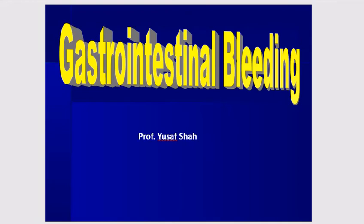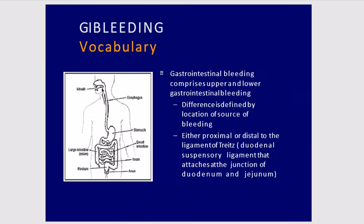Today we are going to talk about gastrointestinal bleeding, which includes upper GI and lower GI bleeding. Gastrointestinal bleeding comprises upper and lower intestinal bleeding, and the difference is defined by the location of the source of bleeding — either proximal or distal to the ligament of Treitz, the duodenal suspensory ligament that attaches the junction of the duodenum and jejunum.